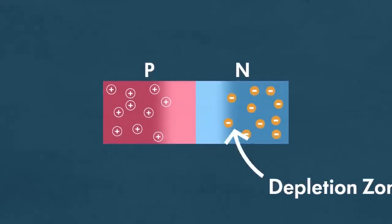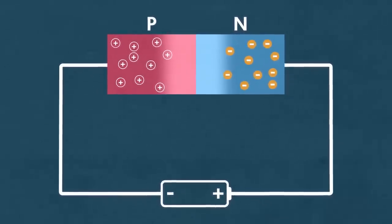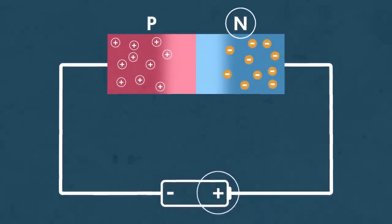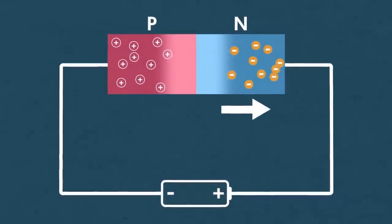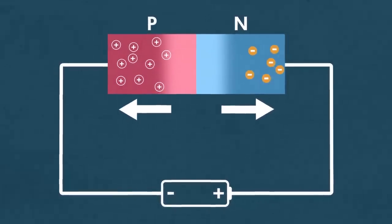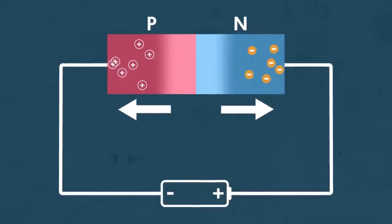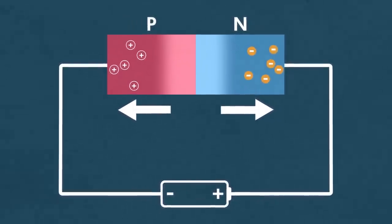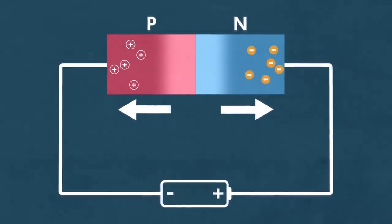So what happens when you connect a battery to a diode? Well, it depends which way you connect it. With the positive terminal of the battery connected to the N-type semiconductor, those freely moving negatively charged electrons are attracted to the positive terminal of the battery, because opposite charges attract. A similar thing is happening on the other side — the positive holes in the P-type semiconductor are pulled towards the negative terminal. So the electrons are being drawn out from the right and the holes are being drawn out from the left, and the depletion zone increases in size. At some point you reach a new equilibrium where this extra buildup of charge in the depletion zone is able to resist the pull of the battery, and no current can flow.